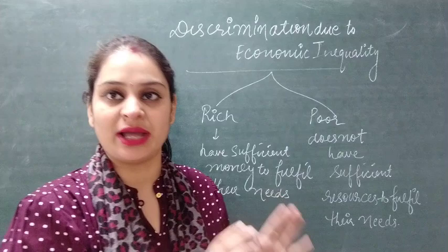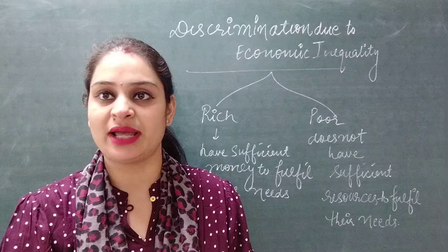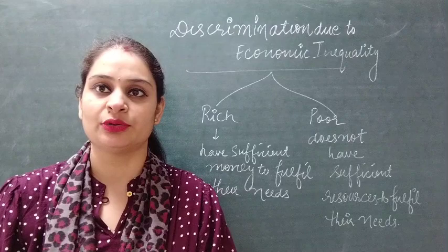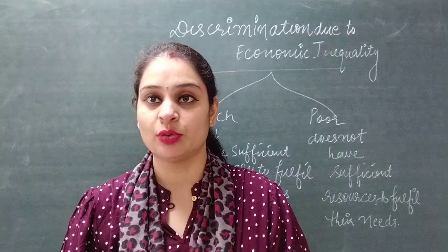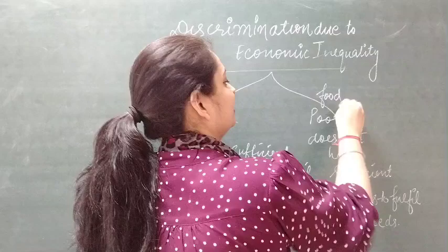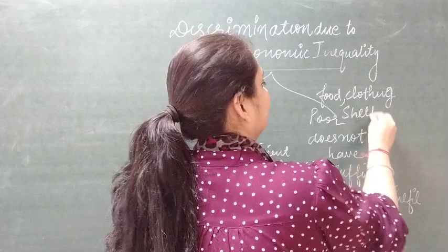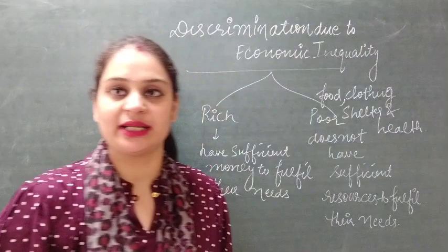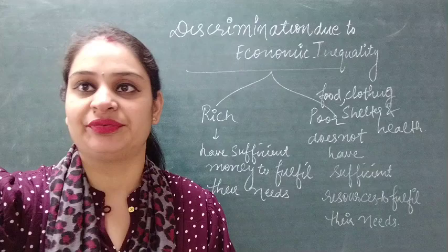So here discrimination is based on the money or wealth people have. The first category is those who have resources to fulfill their needs, and the second is the poor section who do not have resources to fulfill their needs. Sometimes people do not have sufficient resources to complete their basic needs — food, clothing, shelter, and health. Discrimination in society happens on the basis of wealth or resources a group of people has.